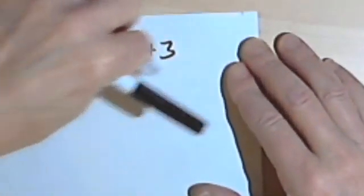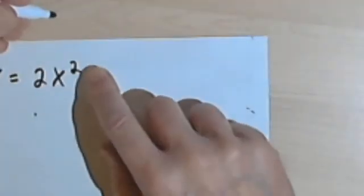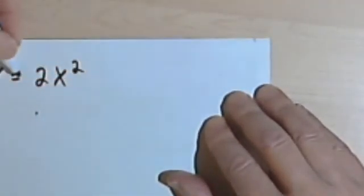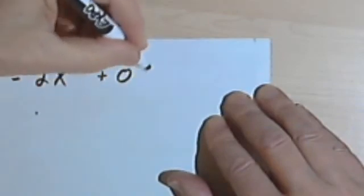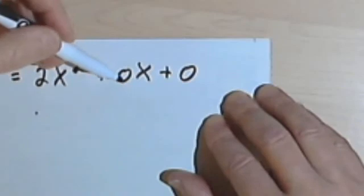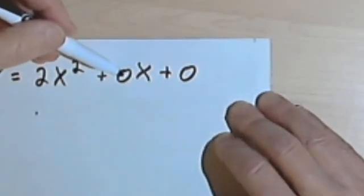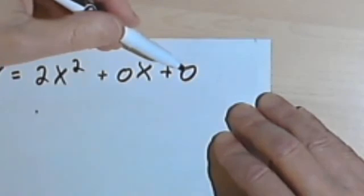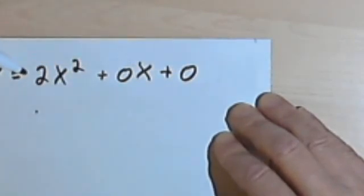Even easier than that would be if you didn't have anything but your x-squared, like y equals 2x-squared. Well, that's going to be y equals 2x-squared plus 0x plus 0. So I know that the x-part of my ordered pair is going to be 0, and the y-part of my ordered pair is going to be 0. So this parabola is going to have a vertex at 0, 0.